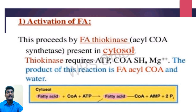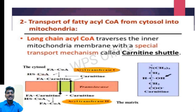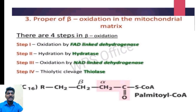The first step is activation of fatty acids. This proceeds by fatty acid thiokinase present in cytosol. The product of this reaction is fatty acyl coenzyme A and water. The second step is transport of fatty acyl coenzyme A from cytosol into mitochondria. Long chain acyl coenzyme A crosses the inner mitochondrial membrane with a special transport mechanism called the carnitine shuttle. The third stage is the proper beta oxidation in the mitochondrial matrix.